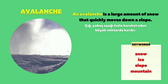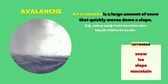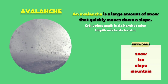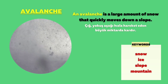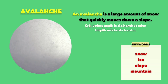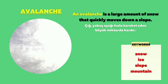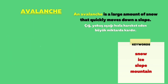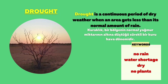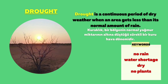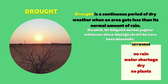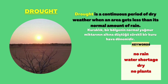Avalanche: An avalanche is a large amount of snow that quickly moves down a slope. Drought: Drought is a continuous period of dry weather, when an area gets less than its normal amount of rain.